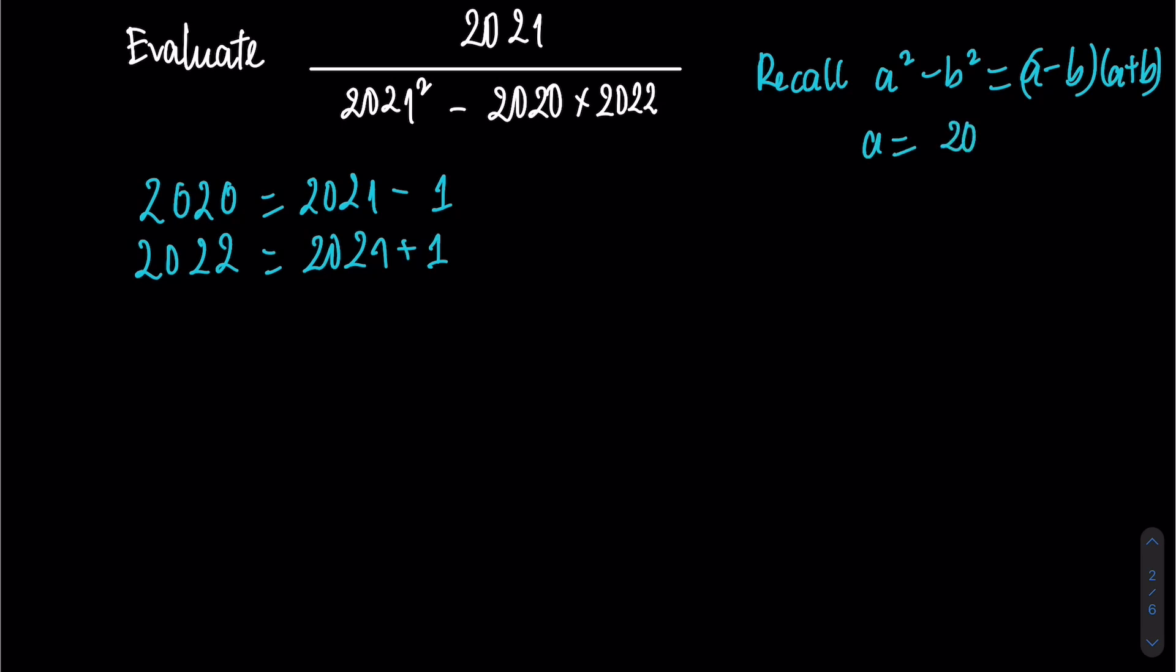I let a equal 2021 and b equal 1. I will have 2020 times 2022 equals (2021 minus 1) times (2021 plus 1).